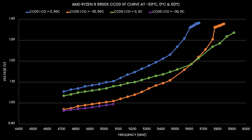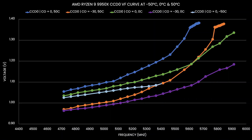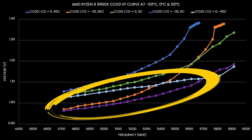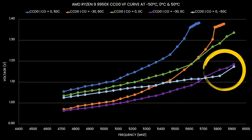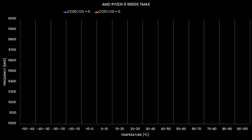What if we apply the best of both worlds — Curve Optimizer and lower temperatures? Unfortunately, my minus 30 Curve Optimizer wasn't stable at minus 50°C, but it was stable at 0°C. We can see that the shape of the curve-optimized 0-degree curve resembles the one without a curve optimizer setting — it's just shifted along the voltage axis. Comparing to the minus 50°C curve, the curve-optimized 0°C curve achieves higher frequencies at lower voltages for the large part, only around 5.7 GHz does the much cooler curve achieve slightly better frequencies.